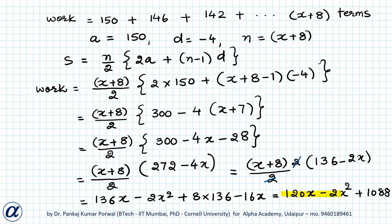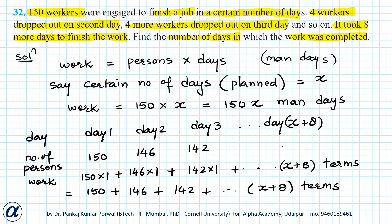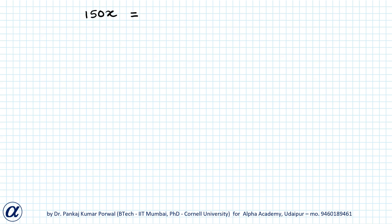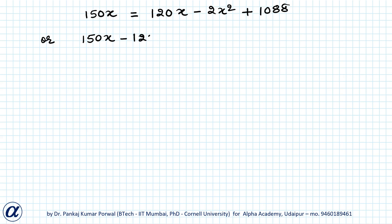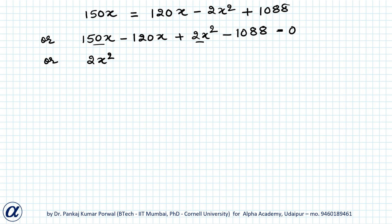We now have the work done in both situations. When workers were dropping out, work done is 120x − 2x² + 1088. In the first situation, the planned work done was 150x. Because in both situations we are working to finish the same job, these two works should be equal. So: 150x = 120x − 2x² + 1088. Bringing all terms to the left side: 150x − 120x + 2x² − 1088 = 0, which gives 2x² + 30x − 1088 = 0.